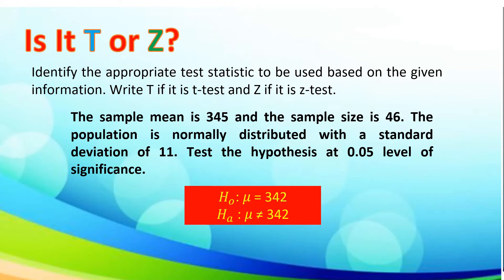Given the null hypothesis, which is mu is equal to 342, and the alternative hypothesis, which is mu is not equal to 342. Analyzing the given, the sample size is greater than 30, and we are given the sample mean and standard deviation. Here we are going to use Z-test.